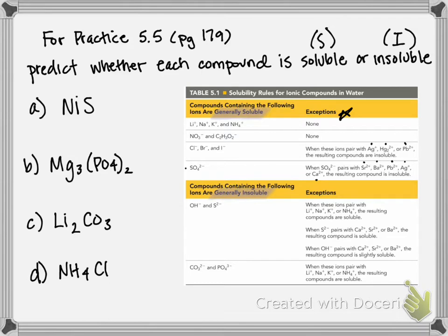On this side, we have exceptions, but this time our exceptions mean that it's soluble. So hydroxide and sulfide ions are typically insoluble unless they're paired with lithium, sodium, potassium, or NH4+, ammonium. Then they'll be soluble.